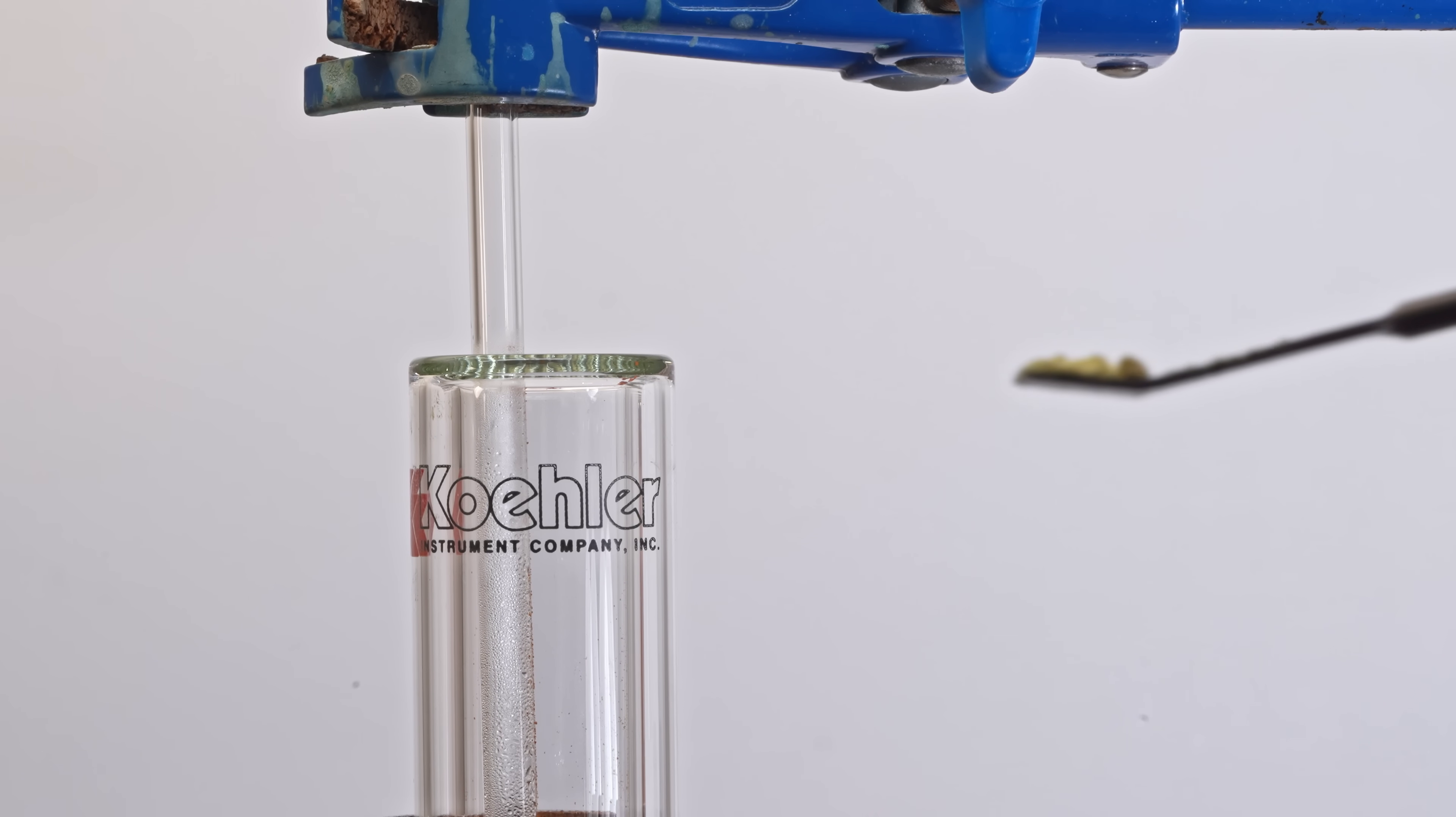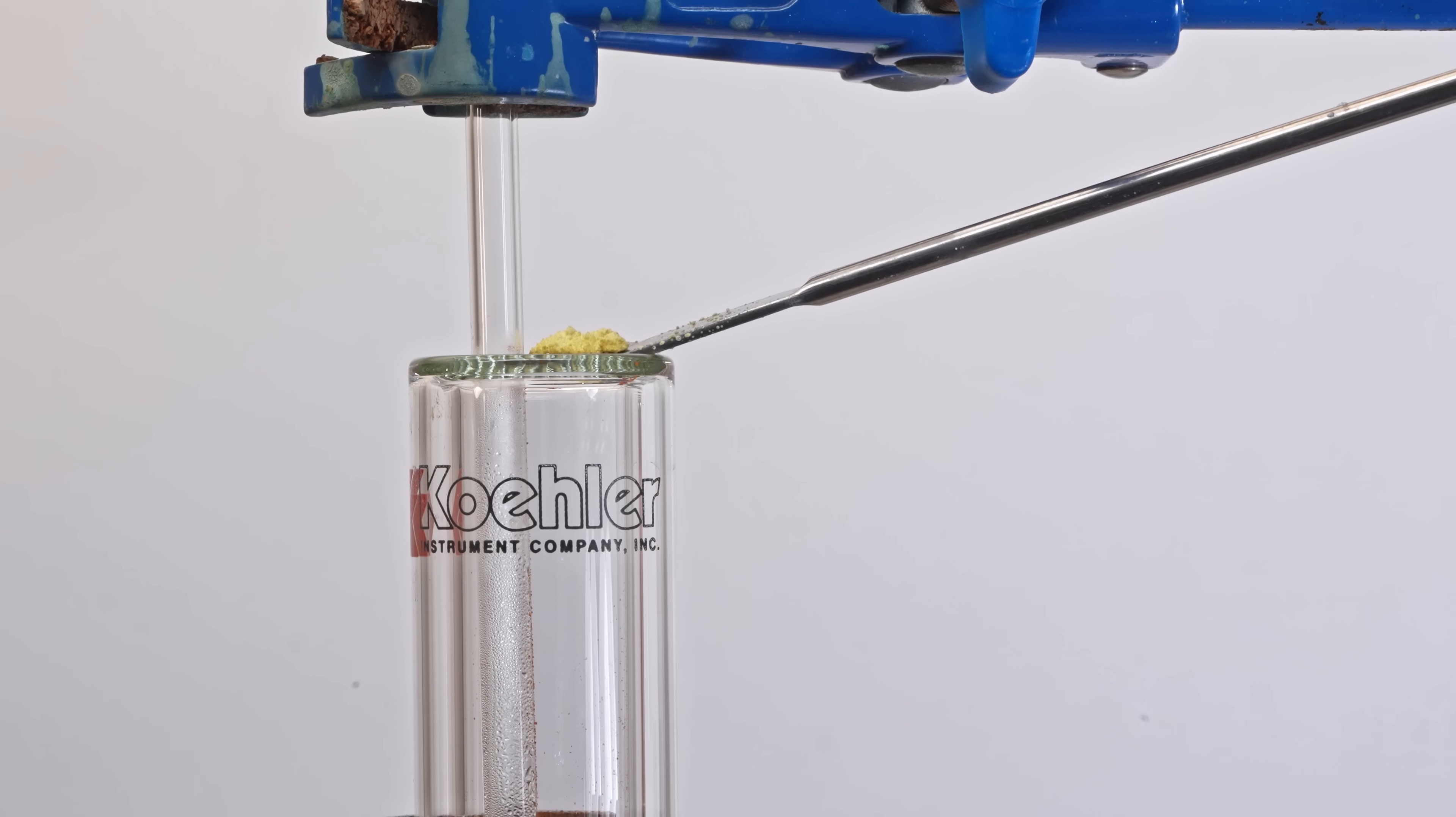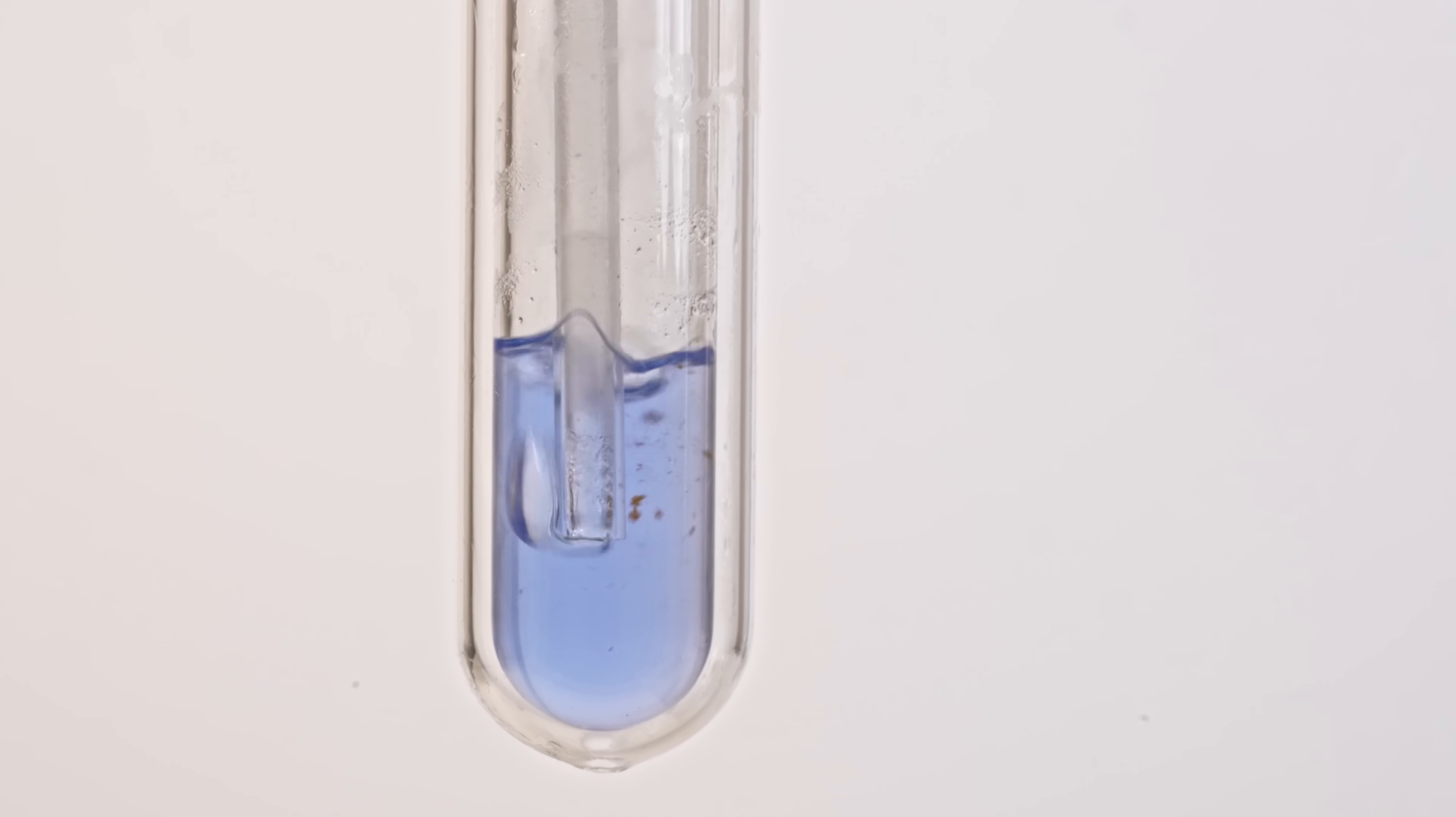Now I add potassium superoxide to the solution, it immediately changes from yellow to red, and over time the red becomes more saturated, indicating the formation of potassium ozonide.